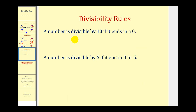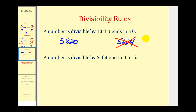A number is divisible by 10 if it ends in a 0, and this rule is pretty straightforward. Comparing 5,820 and 5,624: 5,820 ends in a 0, so it is divisible by 10, while 5,624 does not end in 0 and is not divisible by 10. The last rule: a number is divisible by 5 if it ends in a 0 or a 5. So 9,785 is divisible by 5 because it ends in 5, but 6,276 is not, because it does not end in 0 or 5.